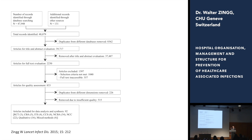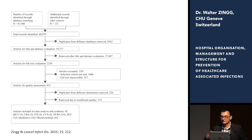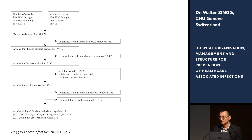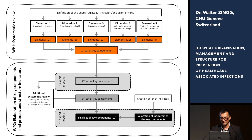When we did the systematic review, breaking it down into five dimensions, we had a total of 50,000 titles and abstracts and narrowed that down until we had 92 eligible publications on which the key components or definitions of the key components were based.